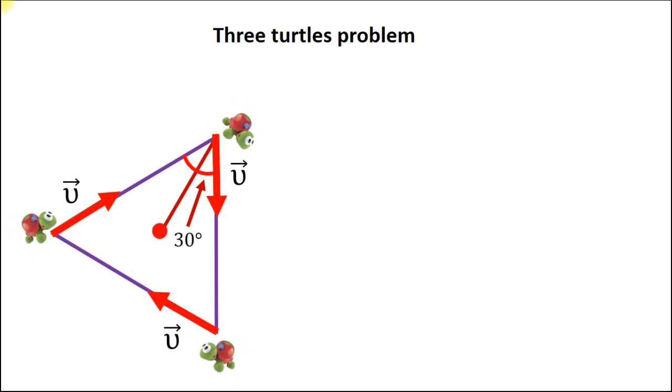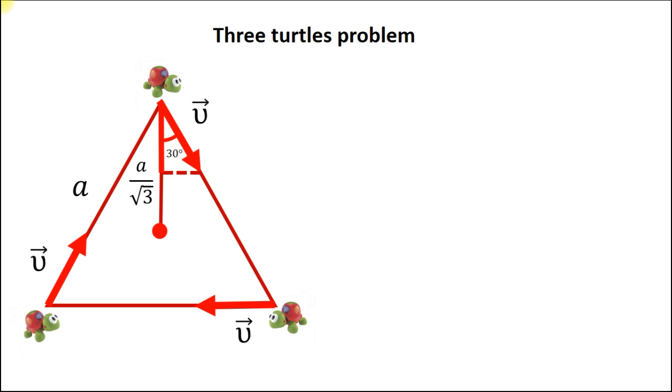What is the value of this component? It equals v multiplied by cosine of 30 degrees, that equals the square root of 3 divided by 2.